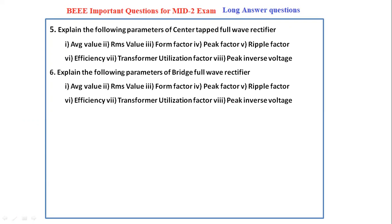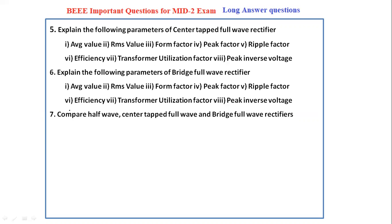Next, explain the parameters of the bridge full wave rectifier including average value, RMS value, form factor, peak factor, ripple factor, efficiency, transformer utilization factor, and peak inverse voltage — just the parameters, no circuit or waveforms needed. Next, compare the half wave rectifier, center tapped full wave rectifier, and bridge full wave rectifier. You have to create a table with three columns showing the comparison of all three types.